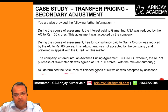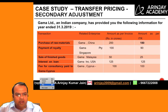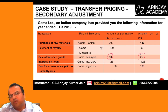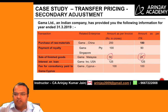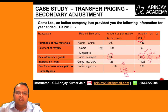The AO determined the sale price of finished goods at 50 crores, which was accepted by the assessee. The ITR had disclosed 25 crores, so no suo-motu adjustment was made earlier. However, during assessment, the amount was increased back to 50 crores and accepted by the assessee, creating a further adjustment of 25 crores. Total adjustment: 55 crores plus 25 crores equals 80 crores.